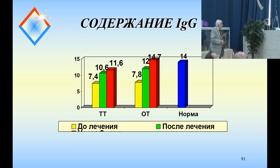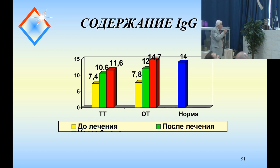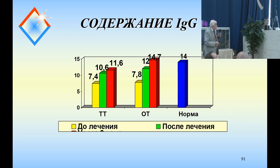This is the immune system. Immunoglobulin G — compared to the norm, you can see that ozone therapy actually maintains and normalizes immunoglobulin G levels.